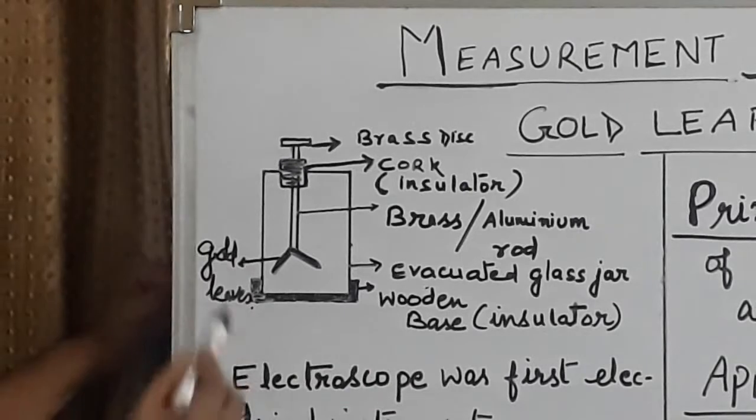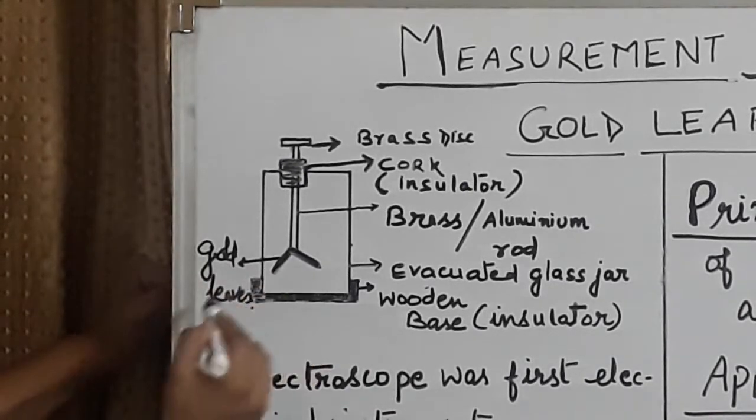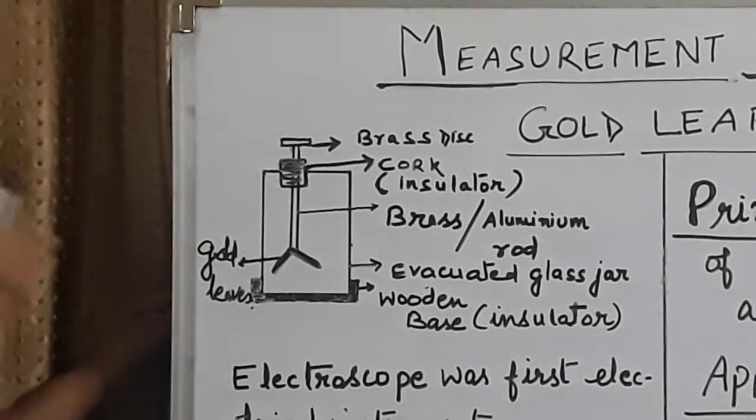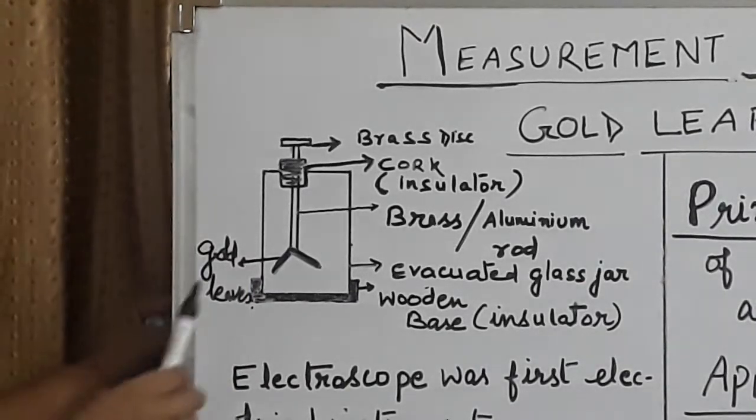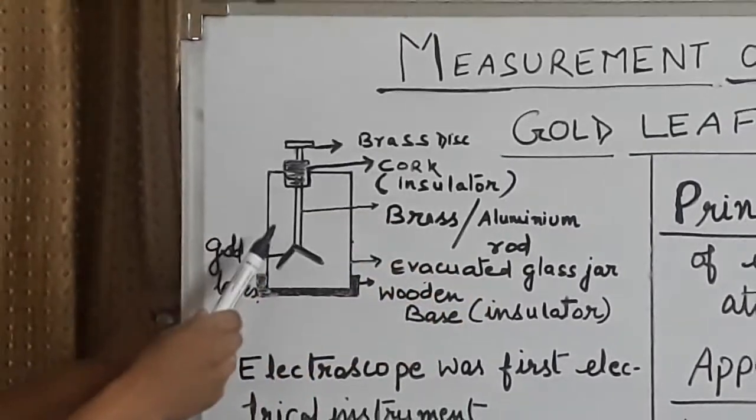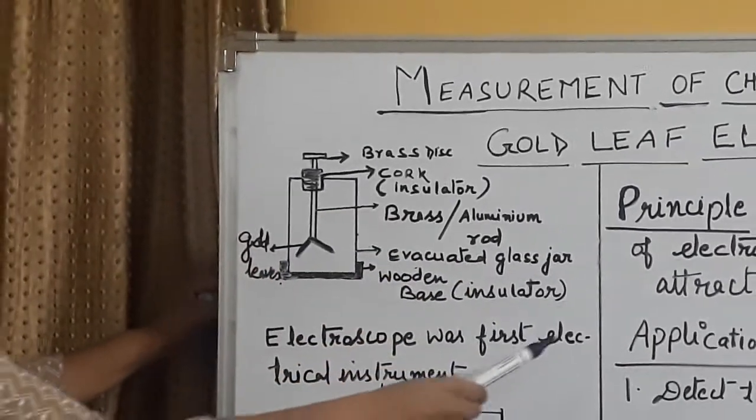Jo base hai, wo ek insulator hai. Hamara jo key term hai, wo hai ye leaves, jo ki gold leaf, thin gold leaves, sometimes aluminum, any very very good conductor can be used. Basic principle you have seen, this is the construction. Now, let us see the applications.